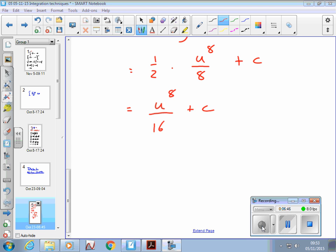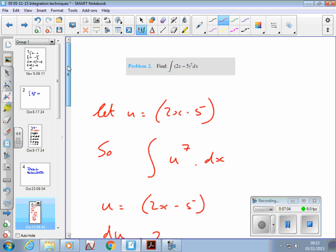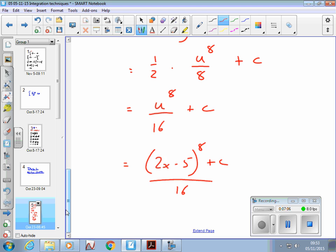So the final step is to replace u with what it was, 2x minus 5. So the integral becomes 2x minus 5 to the power 8 over 16 plus c. Now if that had been a definite integral, I could have then put my limits in and worked out what it was.